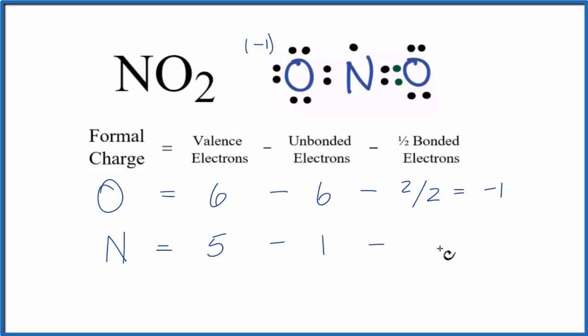And then we subtract one half of the bonded. Two, four, six. So five minus one is four, minus three. That gives us a plus one formal charge on the nitrogen here in NO2.